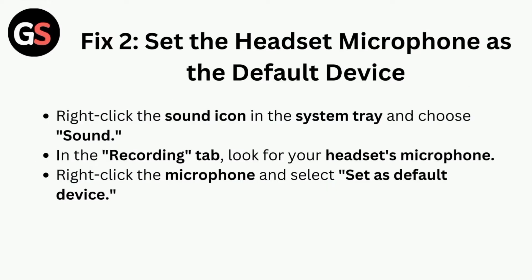Fix 2: Set the headset microphone as the default device. Right-click the sound icon in the system tray and choose Sound. In the Recording tab, look for your headset's microphone. Right-click the microphone and select Set as Default Device.